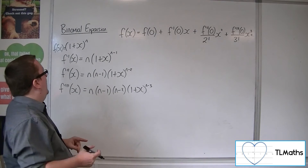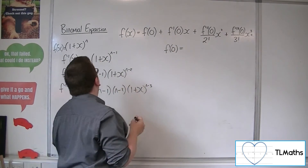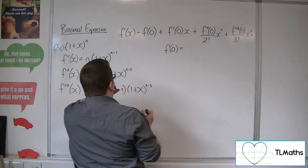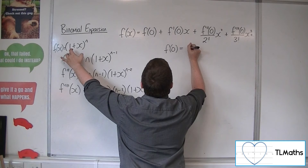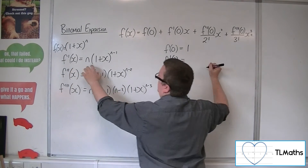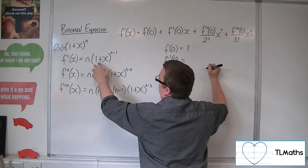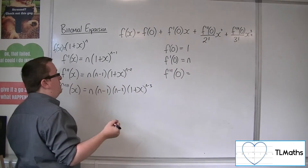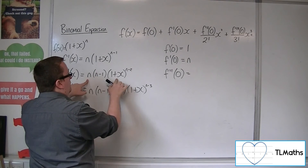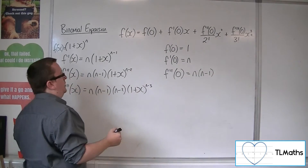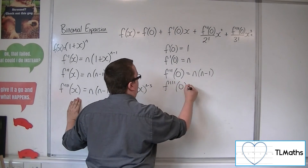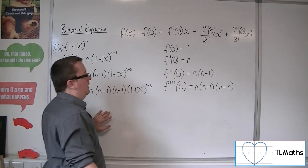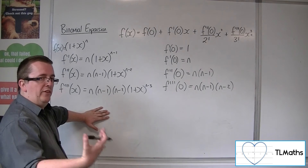We need to evaluate each of these at 0. f(0) is just (1+0)^n = 1 to the n = 1. f′(0): substituting x = 0 gives n times 1 to the n−1, so just n. The second derivative evaluated at 0 gives n(n−1) times 1, so n(n−1). The third derivative evaluated at 0 gives n(n−1)(n−2) times 1. And you can see the fourth one evaluated at 0 will be n(n−1)(n−2)(n−3).